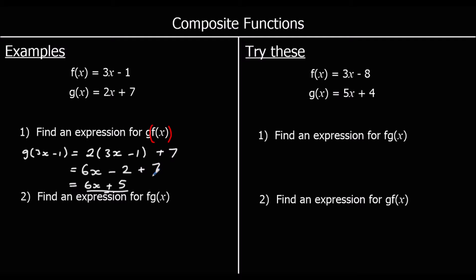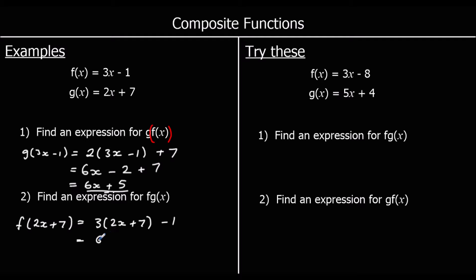How about fg of x? That means taking the g function and putting it into f. The g function is 2x plus 7, so we do f of (2x plus 7), which is 3 times (2x plus 7) minus 1. Expanding the bracket gives 6x plus 21, and then minus 1, which is 6x plus 20.